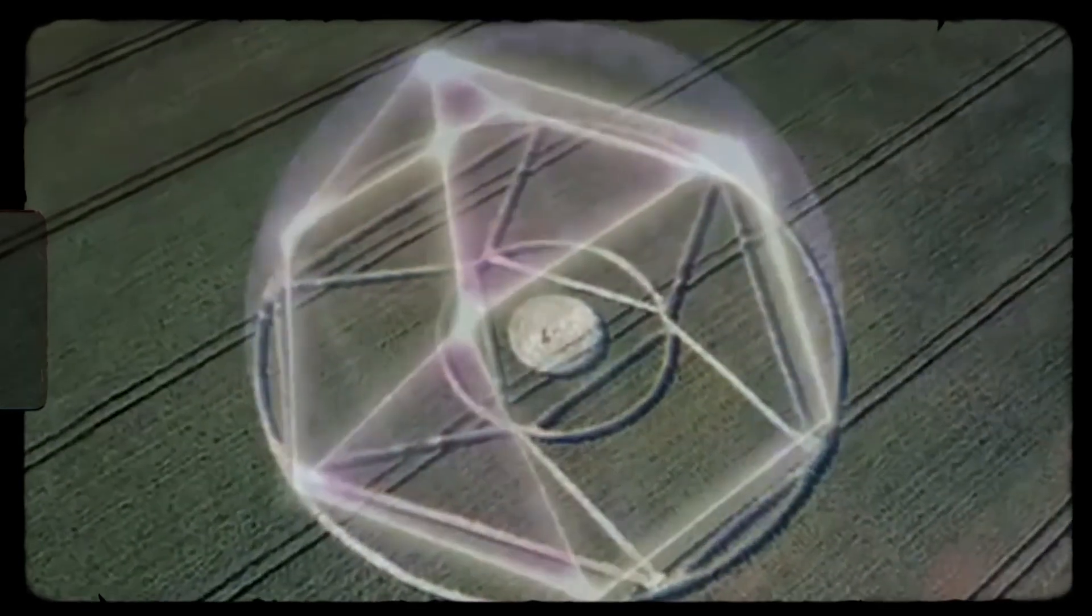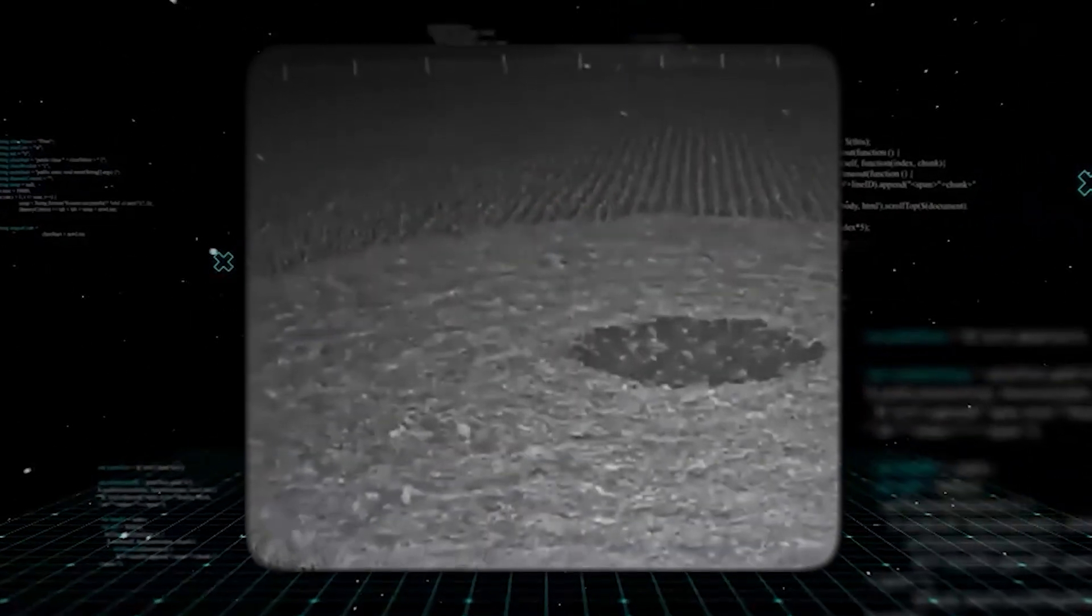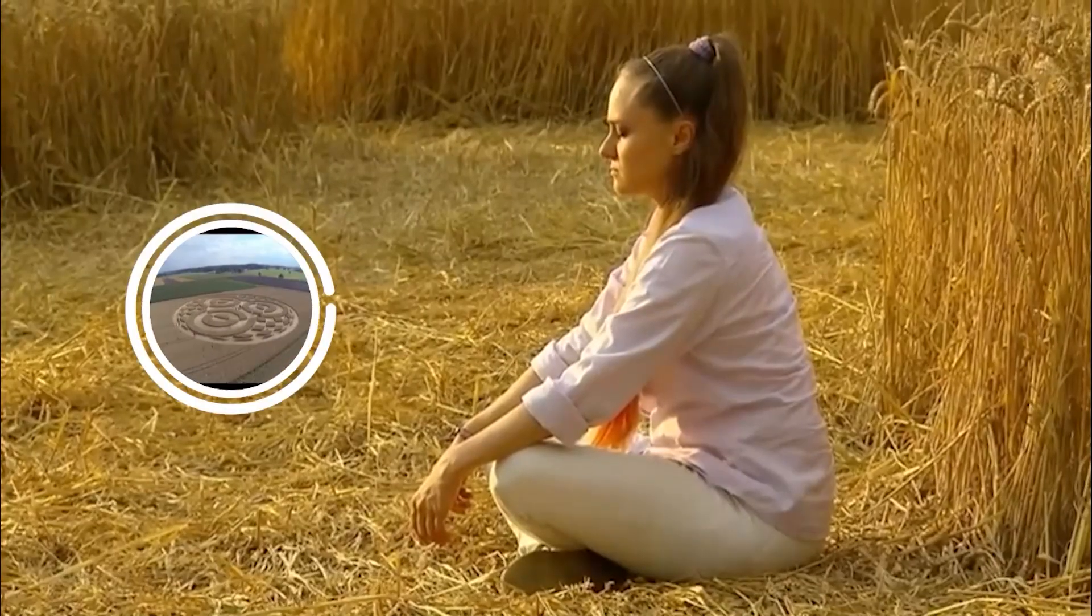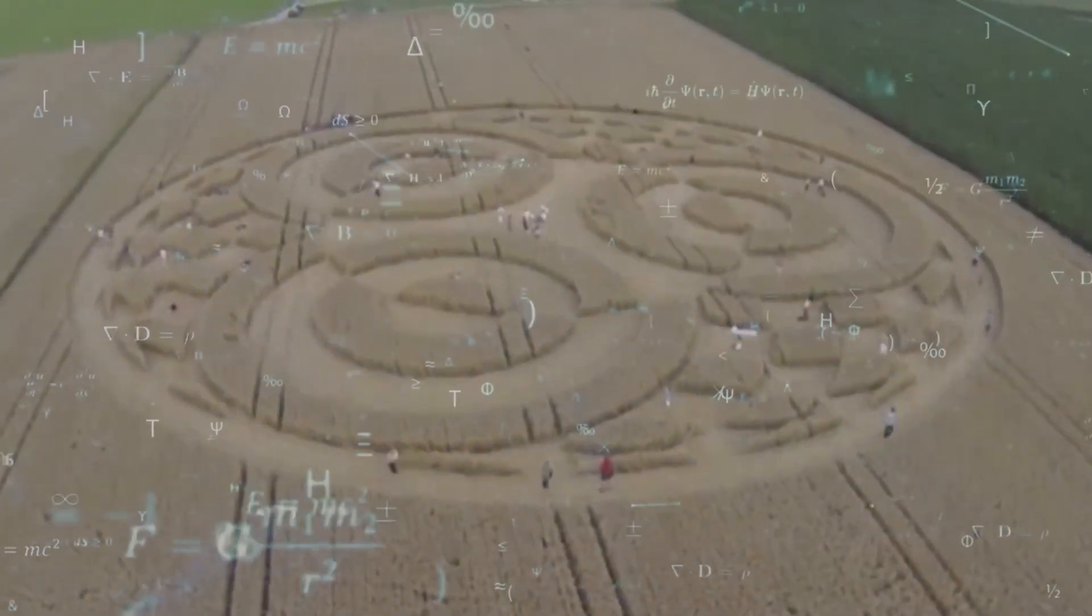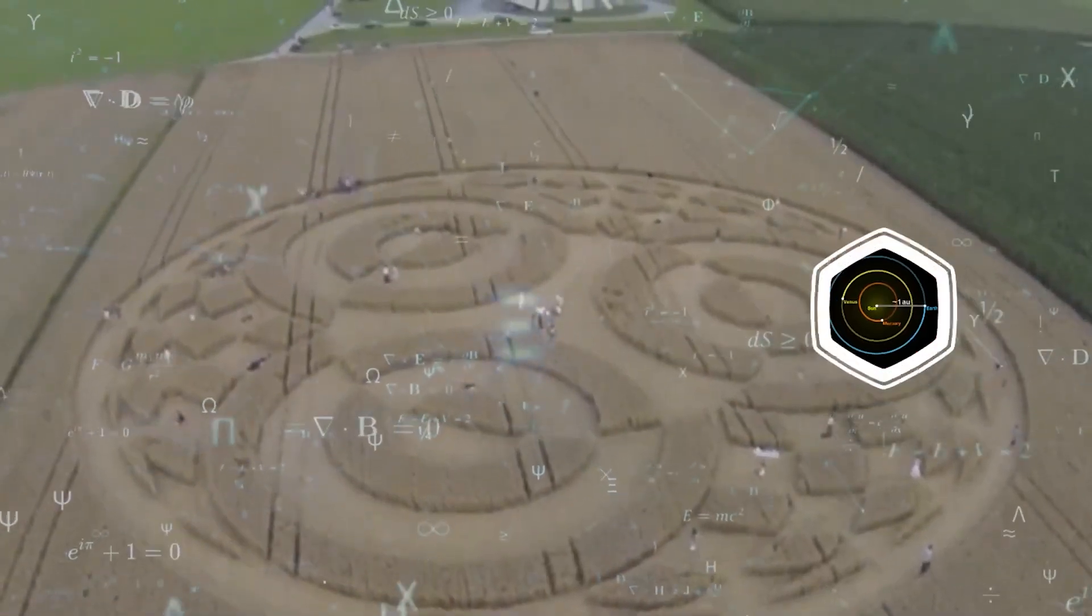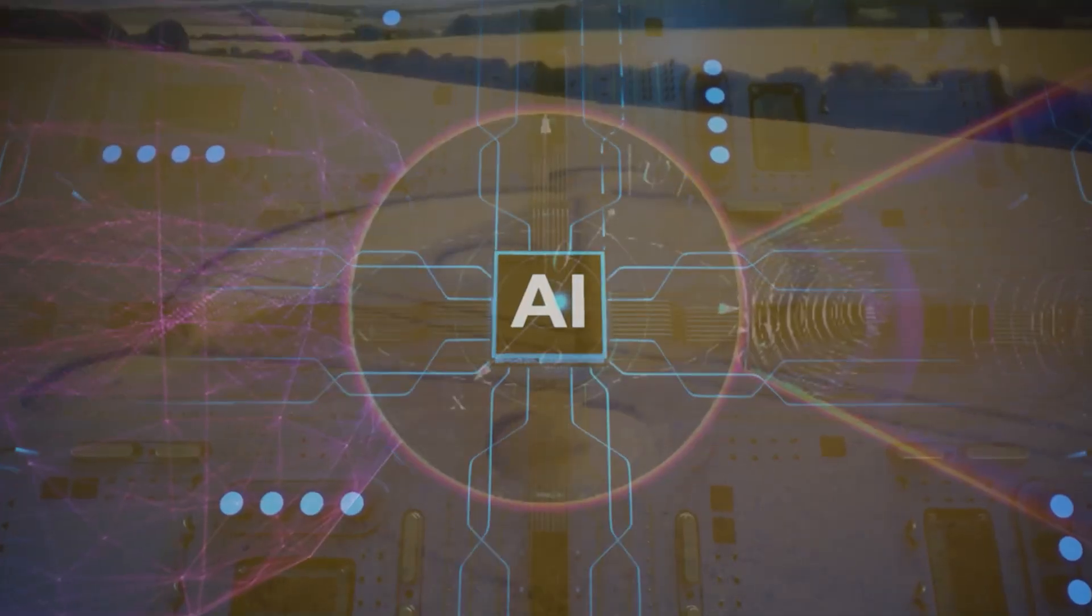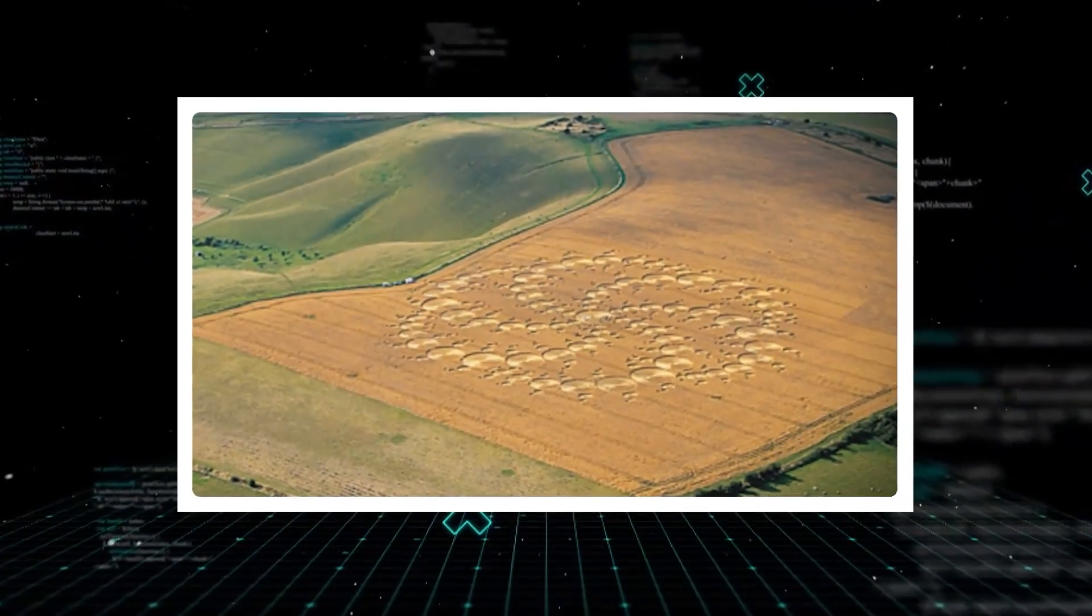The pattern wasn't random at all. The quantum analysis revealed this 2025 formation almost perfectly combines key elements from two separate crop circles that appeared in England exactly 20 years ago. Think about that for a second. A design in Germany today is a direct echo of two patterns made in a different country two decades ago. The mathematical odds of that being a coincidence are astronomical. And buried within that intricate border design, the AI found geometric sequences that follow mathematical constants with astonishing precision. Who or what created it, and why now?